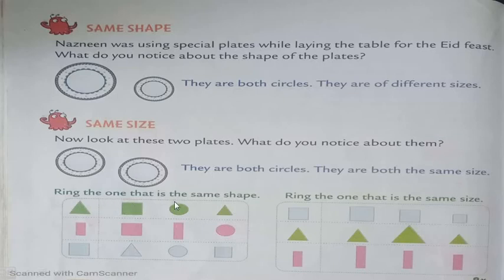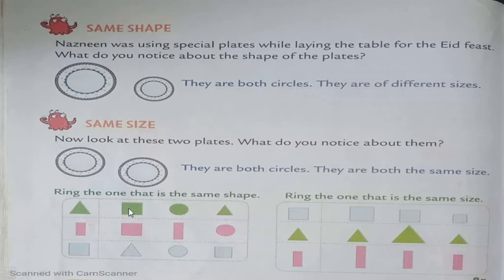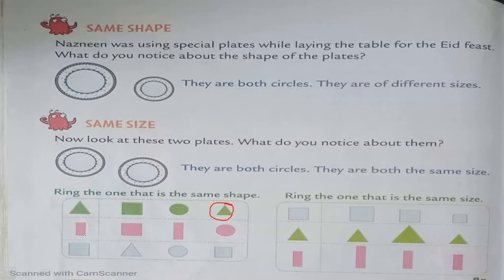Now, ring the one that is the same shape. Look at this picture — this is a triangle. So we have to find a triangle in this given strip. Which shape is this? This is rectangle. This is circle. This is triangle. So what should we do? We should make a circle around this triangle. Now look at this picture — which shape is this? Is it triangle? Is it circle? No, this is a square.